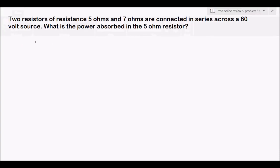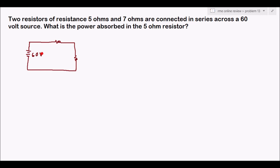This problem requires a diagram. We have a source with two resistors in series: 60 volts, 5 ohms, and 7 ohms. Labeling the circuit: this is our E (source voltage), E1 (voltage across 5 ohm), E2 (voltage across 7 ohm), and I (circuit current).